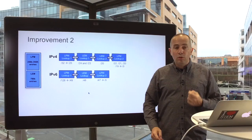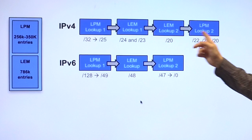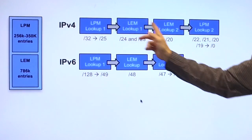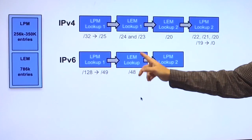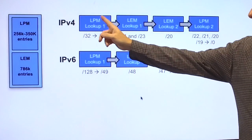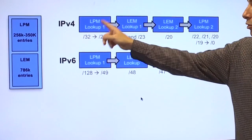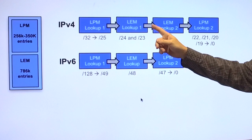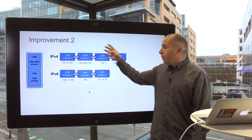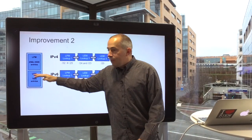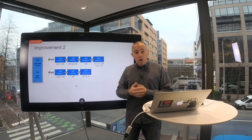But it's not enough. We did some other improvement — something we call the Internet Optimized Mode. This mode simply changes the order of operation in LEM and LPM lookup. We don't change anything on the IPv6 side; all the slash 48 are going in LEM. But on the IPv4 side, we no longer give a lot of importance to slash 32 — it goes into LPM. We are giving more precedence to slash 20, slash 23, and slash 24. All of these go inside the LEM, and that's a good thing because that's the most important route population on the internet.